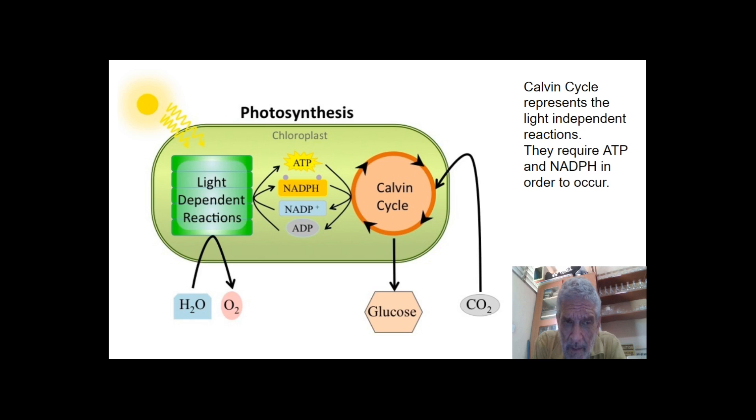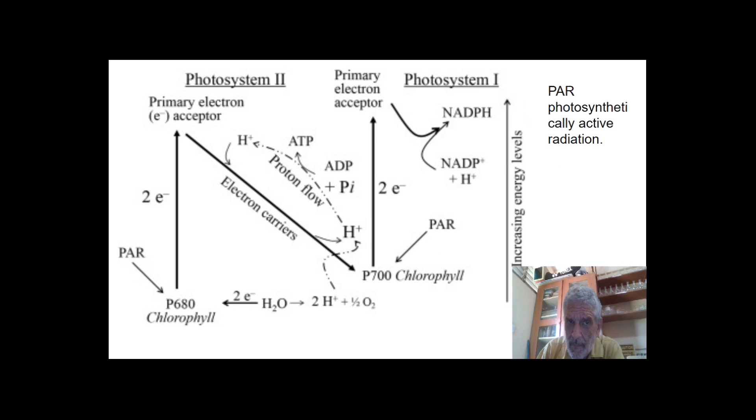So this is a diagrammatic representation of what happens in photosynthesis. You have the light reactions where water is broken down and oxygen is formed. Also ADP is converted into ATP, and NADP plus into NADPH. These are going to be used in something called the Calvin cycle. As the Calvin cycle turns around, glucose is produced. Notice in the Calvin cycle carbon dioxide enters the chloroplast. The Calvin cycle represents the light independent reactions. However, they require ATP and NADPH in order to occur.